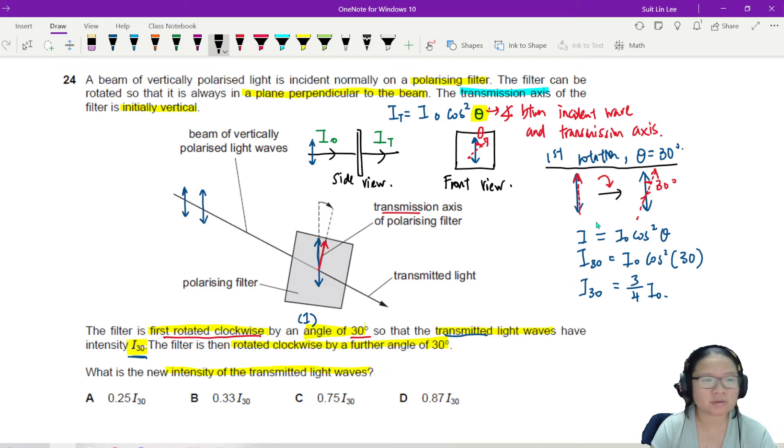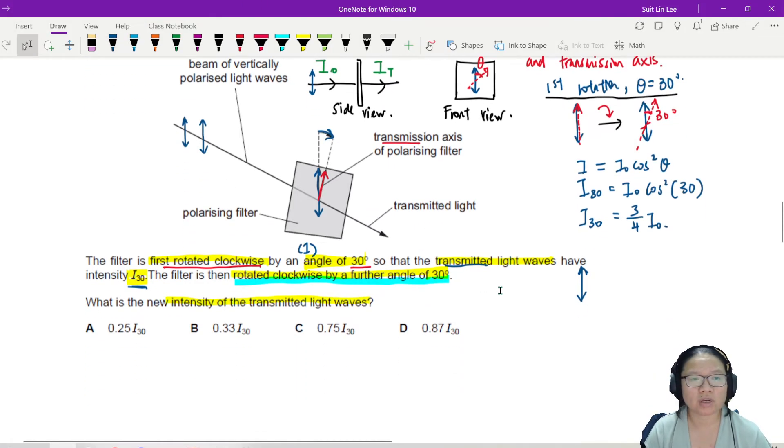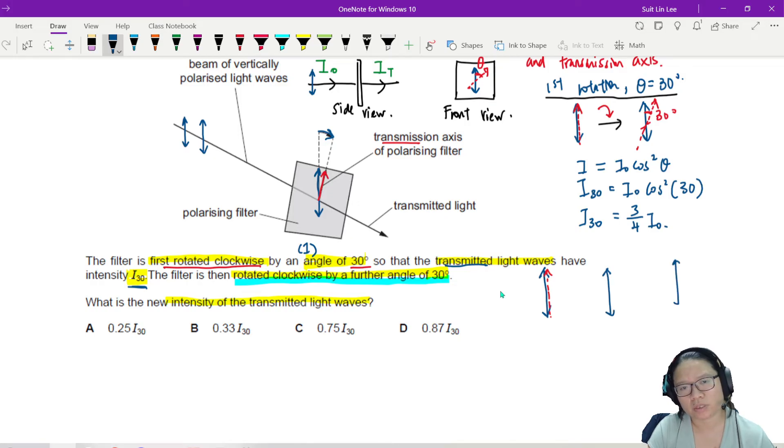But it rotates again, right? Because it says here that it's rotated clockwise by a further 30 degrees. So then this was your wave. Your incident wave has never changed because there's no second filter. I just rotate this first filter. So if I rotate further 30 degrees, it means that, let's say this is the incident wave. It went from here to 30 degrees, so maybe somewhere here. And then rotate a further 30 degrees. So rotate more, another 30.